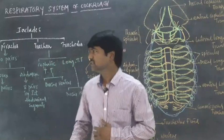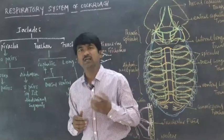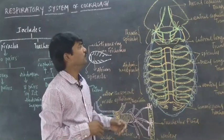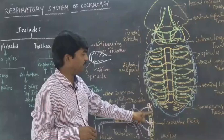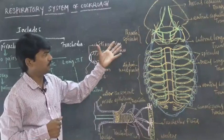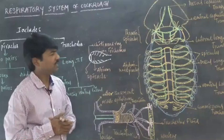Spiracles are also known as stigmata. In cockroach, there are ten pairs of spiracles present. The first two pairs are located in the thorax region and the remaining eight pairs are located in the abdominal region. So total ten pairs of spiracles, also known as stigmata, can be identified in the respiratory system of cockroach.